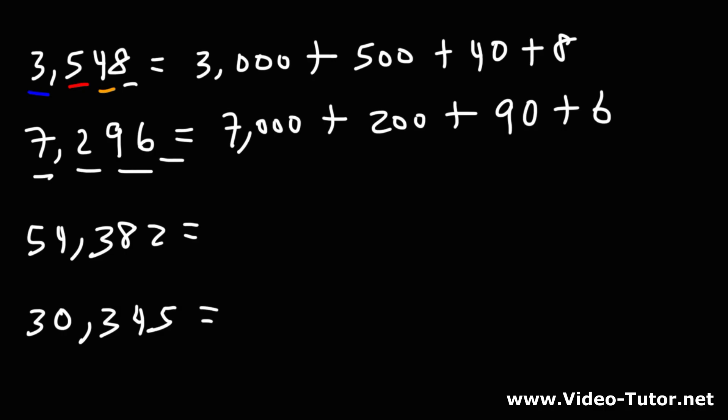Now what about the third example? 54,382. The 5 is in the 10,000 place. 5 times 10,000, that's 50,000. The 4 is in the thousands place. So that's going to be 4,000. So plus 4,000.